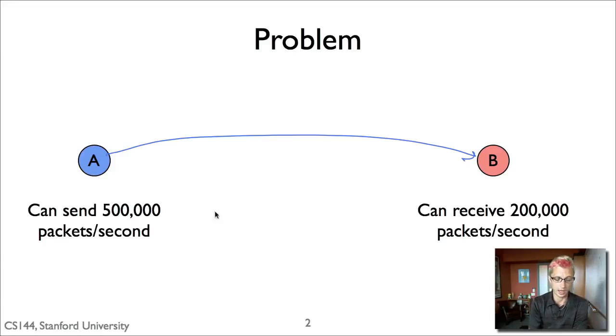And so the issue is that if A sends data at this full rate of 500,000 packets per second, then 300,000 of those are gonna have to be dropped at B. That is, B will not be able to process them, and so only 40% of the packets will come through.